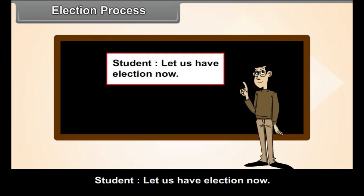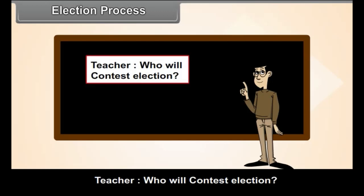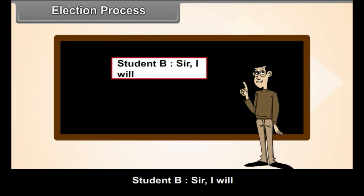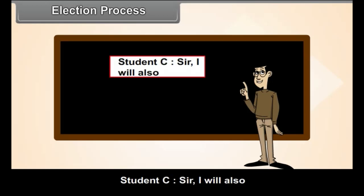Student: let us have the election now. Teacher: who will contest the election? Student A, Student B, and Student C all volunteer to contest.